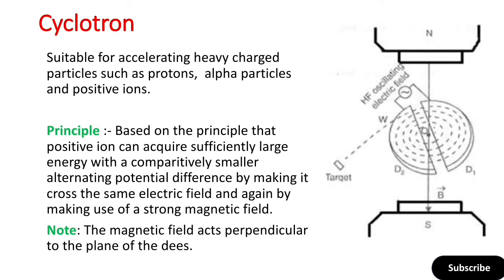Next is the cyclotron. The cyclotron is designed to overcome the drawbacks of linear accelerators. It is able to accelerate heavy charged particles such as protons, alpha particles, and positive ions. It is based on the principle that positive ions can acquire sufficiently large energy with a comparatively smaller alternating potential difference.